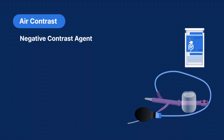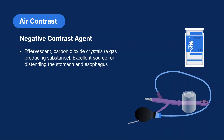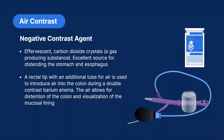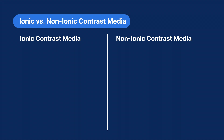The last contrast agent we'll discuss is air contrast. Air contrast is a negative contrast agent. Examples include effervescent carbon dioxide crystals, a gas-producing substance which is an excellent source for distending the stomach and esophagus in barium swallow studies and upper GI series. A rectal tip with an additional tube for air is used to introduce air into the colon during a double-contrast barium enema. The air allows for distension of the colon and visualization of the mucosal lining.